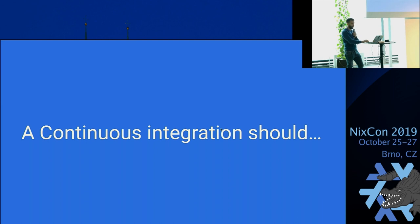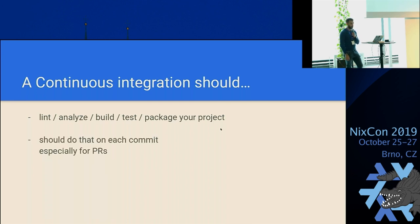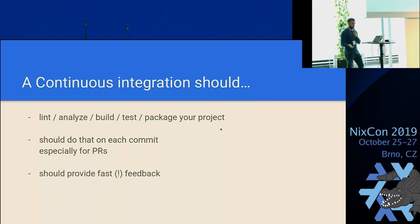So how do we want the CI to behave? In general, it should lint, it should analyze, it should build, it should test and package your project. It should do that on each commit to assist developers in their workflow while they are iterating over a PR — especially you want it to run on PRs to discover all breakages before they reach master. But most importantly, you want your CI to be fast. If you're waiting for like 30 minutes or an hour to get your tests to pass, you're basically blocked, and that massively decreases developer productivity.